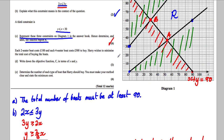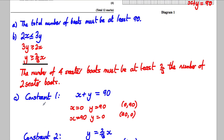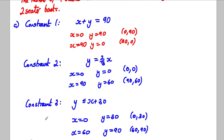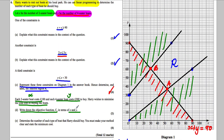That's the first part done for four marks. Next: each 2-seater boat (X) costs £100 and each 4-seater boat (Y) costs £300. Harry wishes to minimise the total cost. Part D asks us to write down the objective function C in terms of X and Y. The cost is £100 for each X and £300 for each Y, so C = 100X + 300Y.